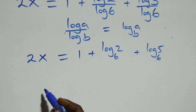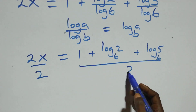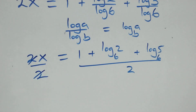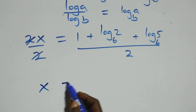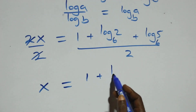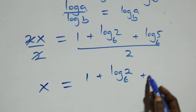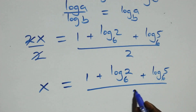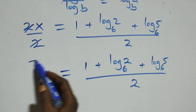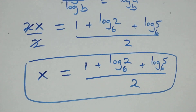Then here we divide both sides by 2 — divide this side by 2, also divide this side by 2. The 2 cancels, and we have x equals to 1 plus log(2 to base 6) plus log(5 to base 6), all over 2.